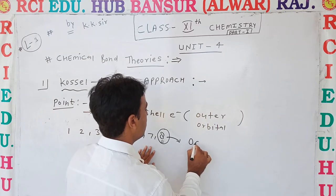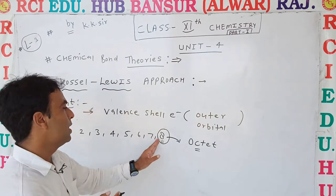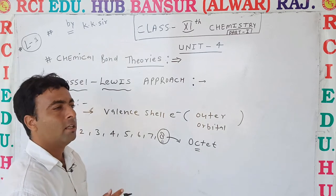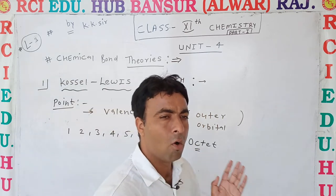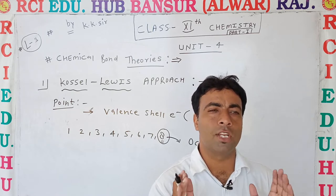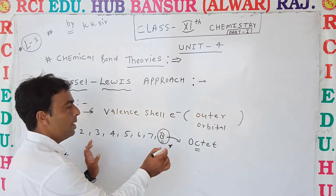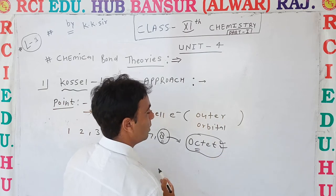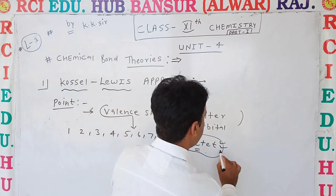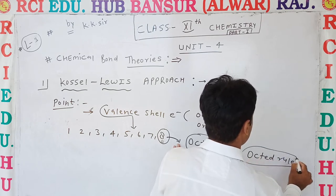The maximum number is 8, so every element wants to complete its maximum valence shell number, which is 8. This is called the octet. If the octet is complete, the atom is in a stable form. Every atom completes its octet and becomes stable. This concept is called the octet rule. Valence shell electrons depend on the octet — it may be complete or incomplete.